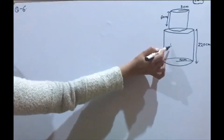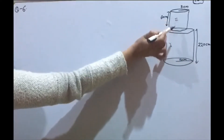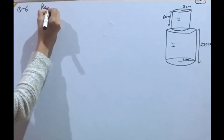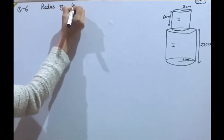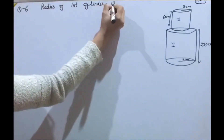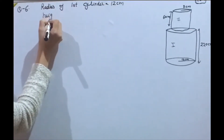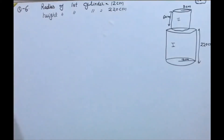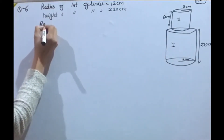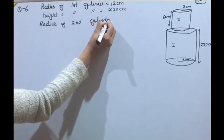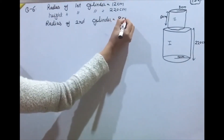The mass density is 8 grams per cm³. Now we write down the dimensions: radius of first cylinder = 12 cm (half of diameter 24), height of first cylinder = 220 cm. Radius of second cylinder = 8 cm.